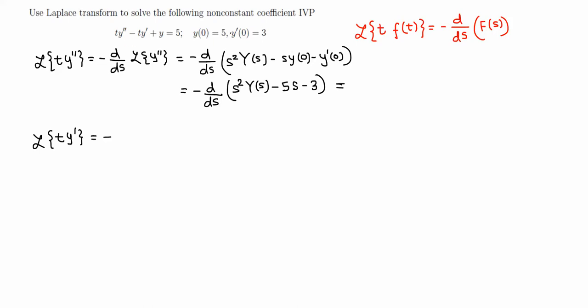To solve this initial value problem, we take the Laplace transform of both sides. We use the formula: the Laplace transform of t times some function f is negative d/ds of the Laplace transform F(s), since t is raised to power 1, giving a factor of negative 1.